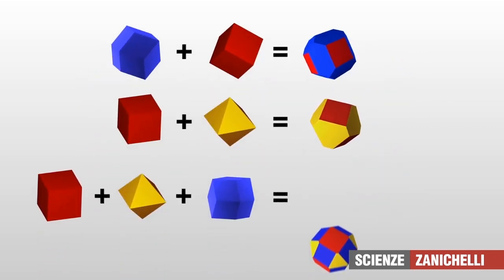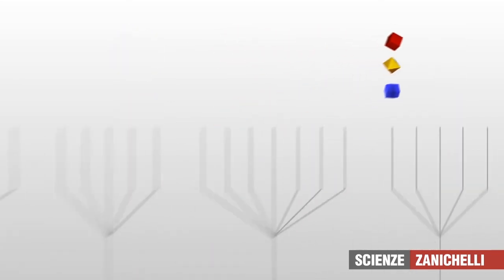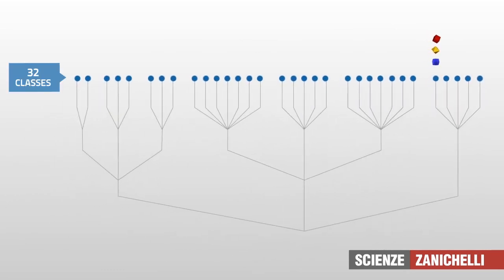Simple forms may combine to create extremely complex shapes. There are dozens of possible simple shapes, and they are divided into 32 classes, arranged in seven systems, organized into three groups which contain all minerals.